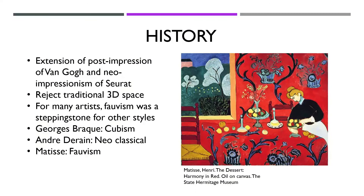The history of Fauvism derives from a combination of Post-Impressionism and Neo-Impressionism. These movements and their works influenced artists like Matisse to reject traditional art in terms of 3D space and turn towards flat areas with passes of colors instead. During the time of Fauvism, artists were creating pieces that contained brilliant colors and spontaneous and harsh brush strokes.